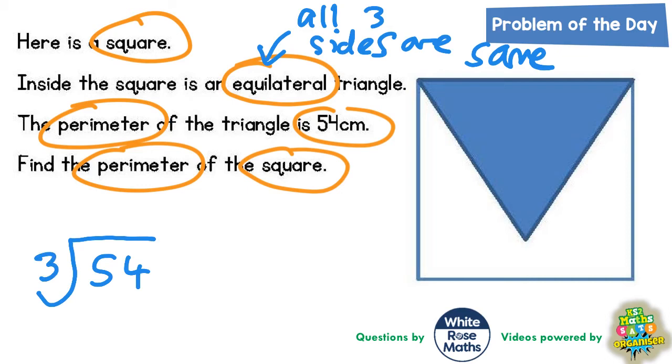Well, threes into five goes one, with two left over, so carry the two to make 24. Threes into 24 goes eight. So, if you split the 54 into three equal pieces, that means it's 18 on each side.